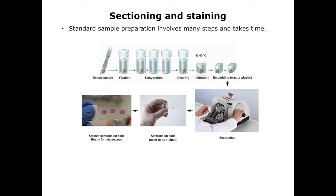The sample is then fixed, or treated, with chemicals that cross-link and denature proteins and other macromolecules. This kills the cells and keeps the large molecules from moving — it's like hard-boiling an egg. Heat denatures the egg proteins so they stay in place when you remove the shell. After fixation, the sample is dehydrated, treated to remove water, typically by running it through a series of increasingly concentrated alcohol solutions, ending at 100% alcohol.